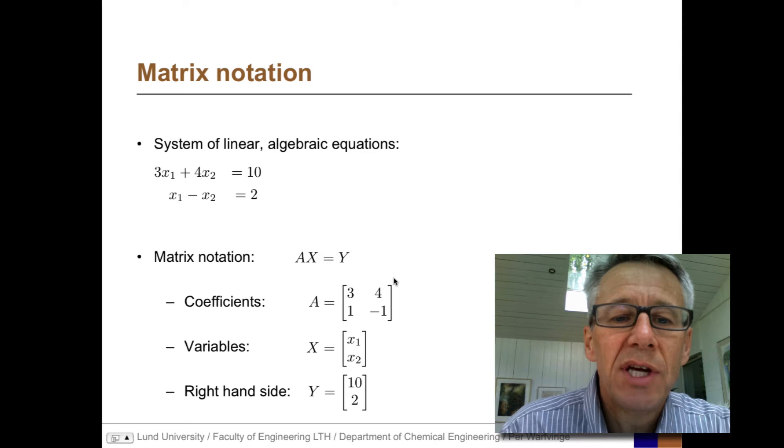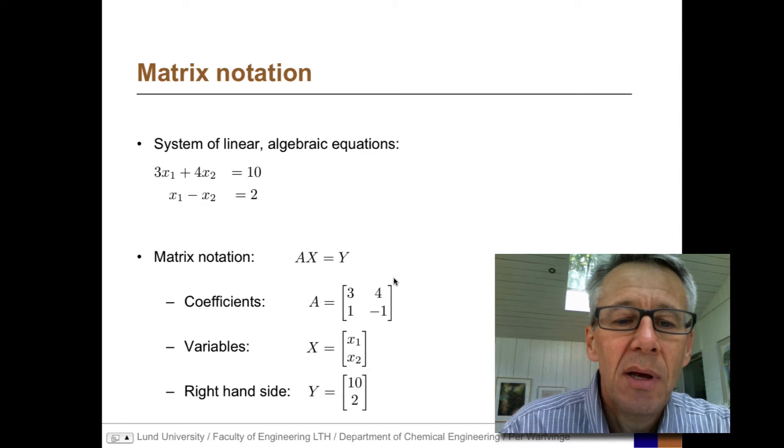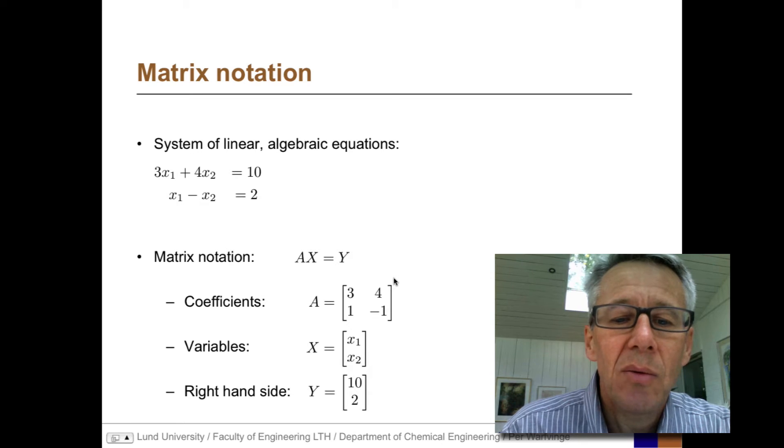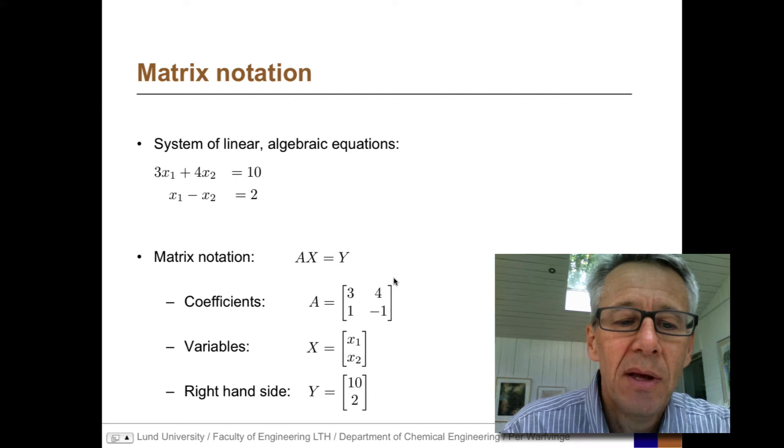In Matrix Notation, this becomes Ax equals y, where A is the coefficient matrix. 3 and 4 represent the first equation, 1 minus 1 represents the second equation. We also have the variables, the x's, x1 and x2, in the column vector, and the right-hand side of the equation in the column vector y, 10 and 2.